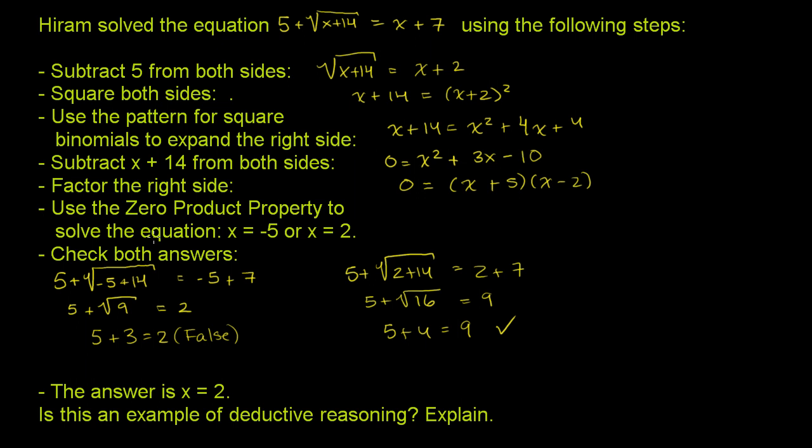Then he uses the zero product property to solve the equation. That's just the property that if you have two things and you take their product and it equals 0, one or both of them must be equal to 0.